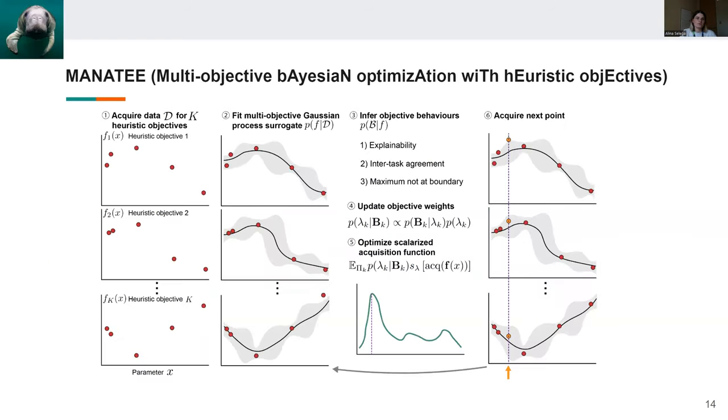So this is an overview of our method, which is called MANATEE, and stands for multi-objective Bayesian optimization with heuristic objectives, and it basically follows the normal workflow of a Bayesian optimization approach. We start with our initial training set or initial acquisitions for the k heuristic objectives. We then fit a multi-objective Gaussian process to our data. And in step three, we compute the desirable behaviors for each objective using the posterior fit to that objective.